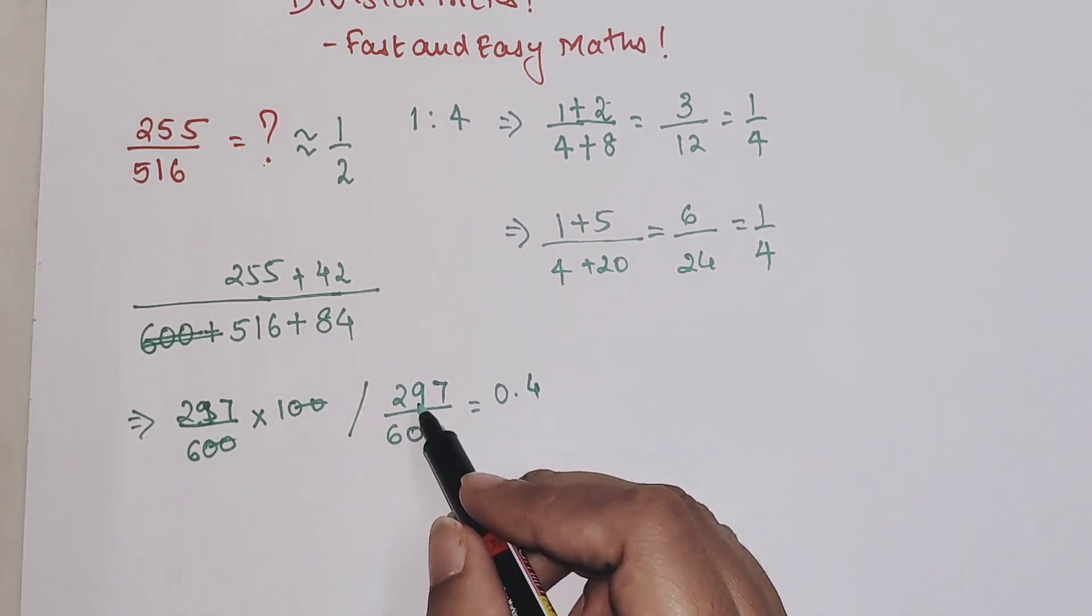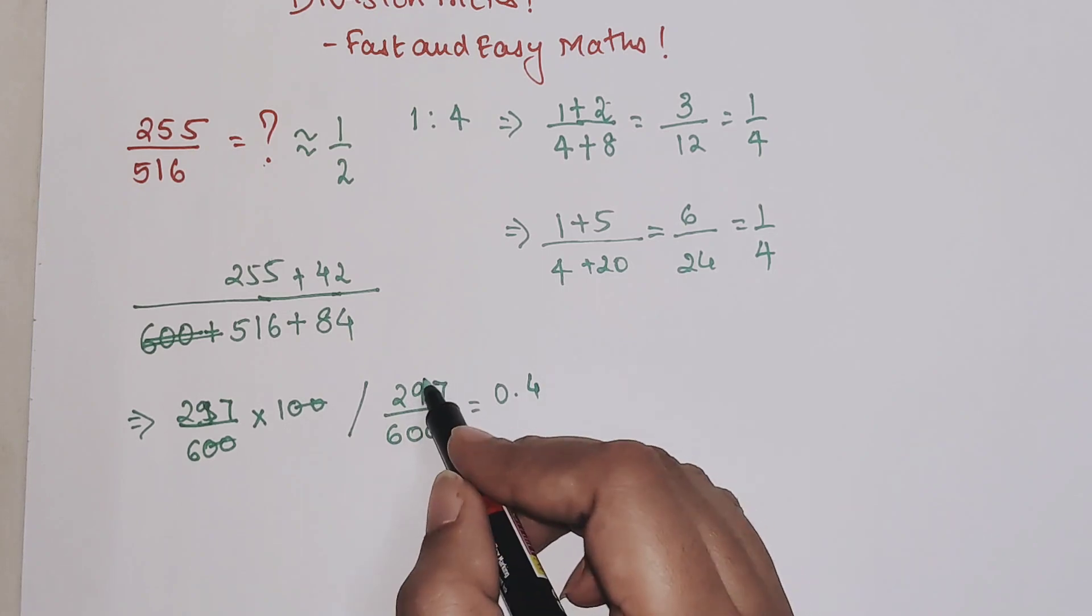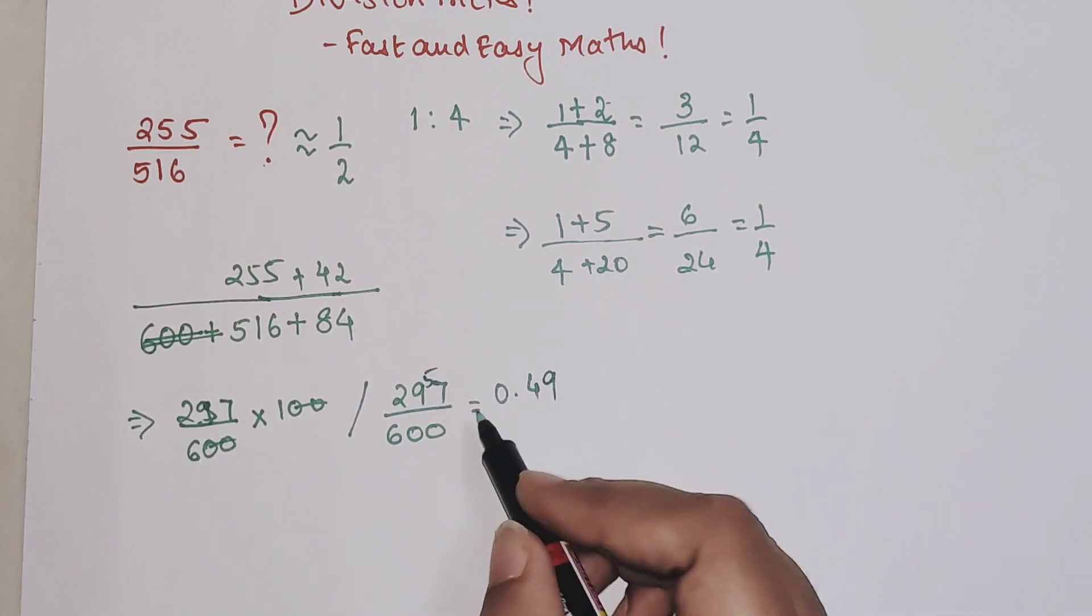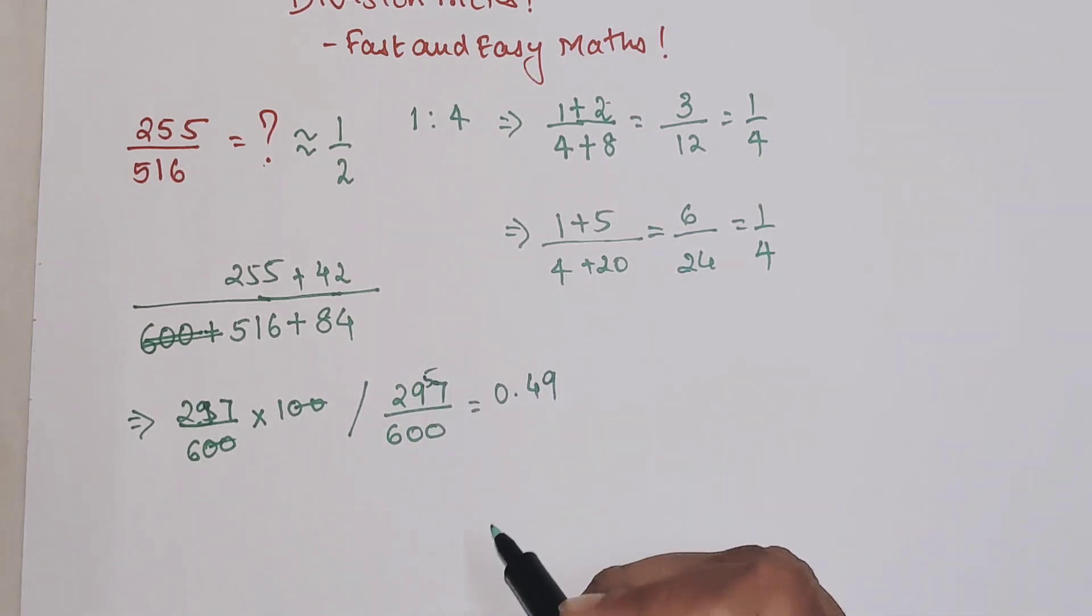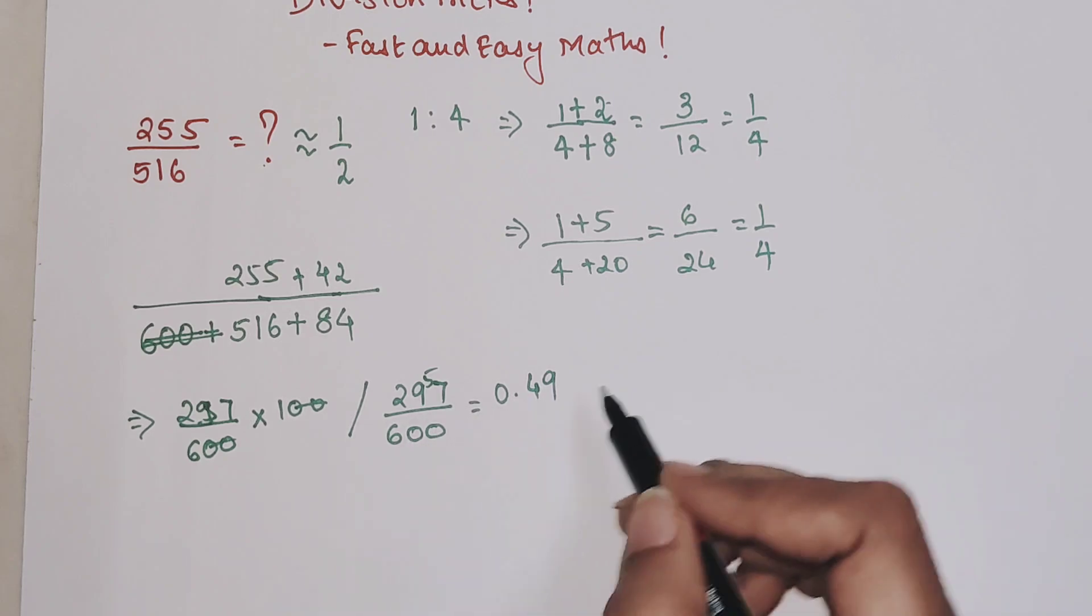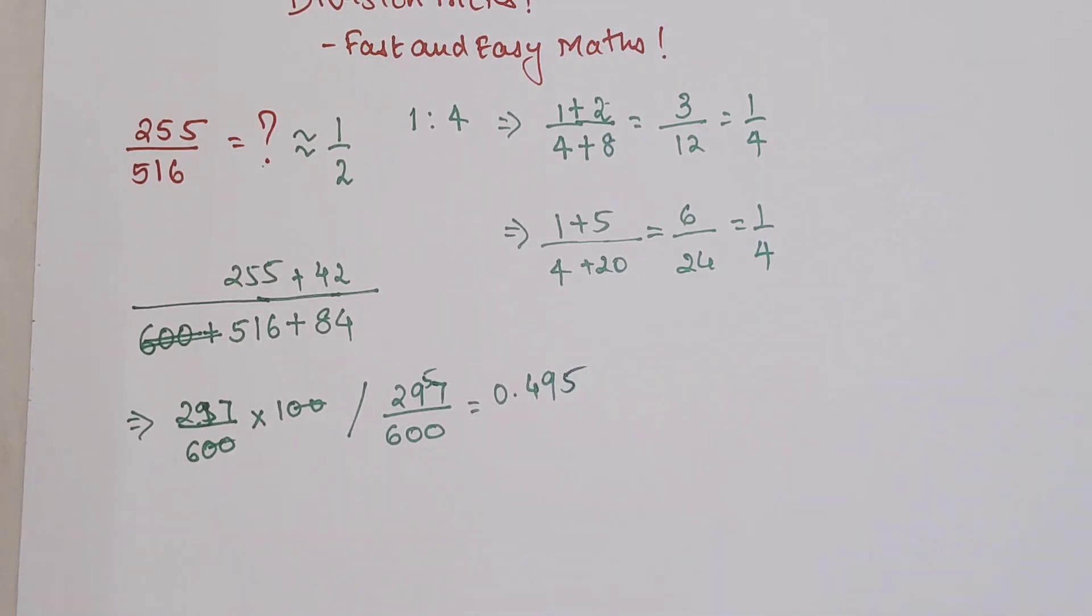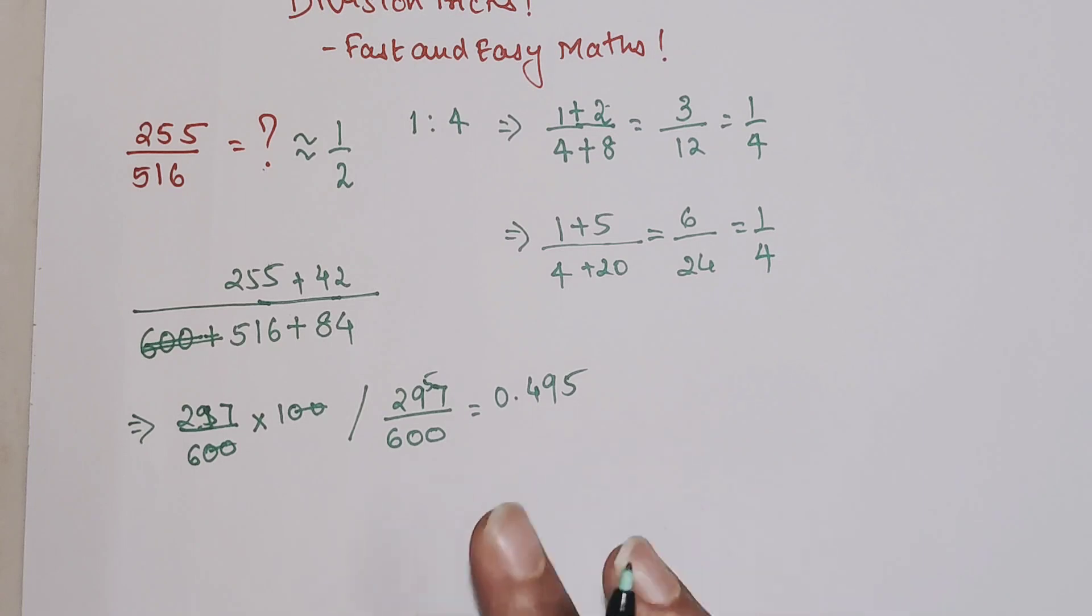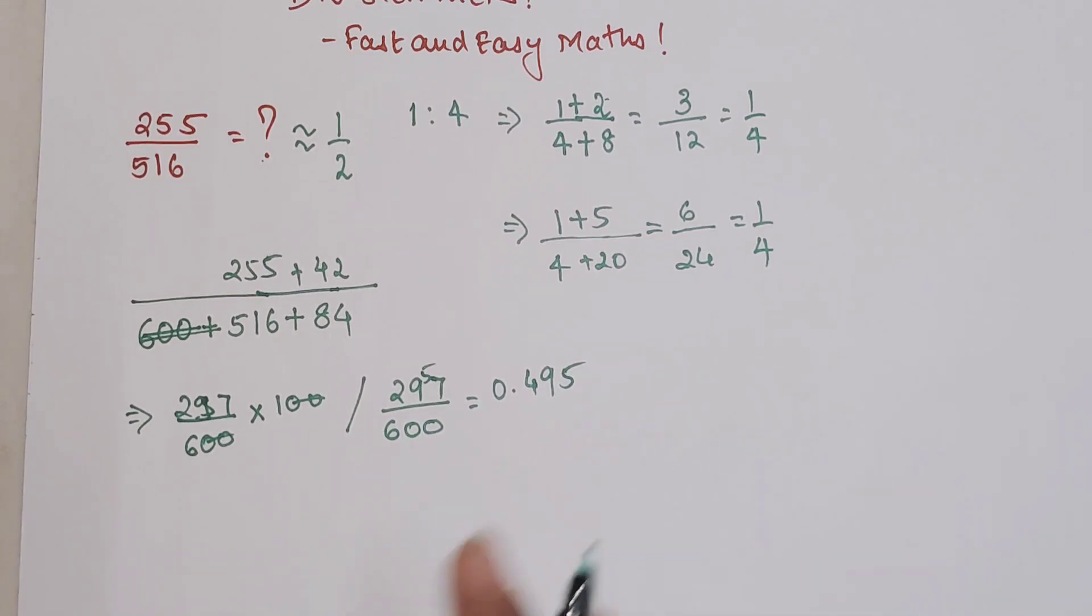When you take 24 from 29 you're getting 5, so again 9, then 54 taken from 57 you're left with 3, so 0.495.